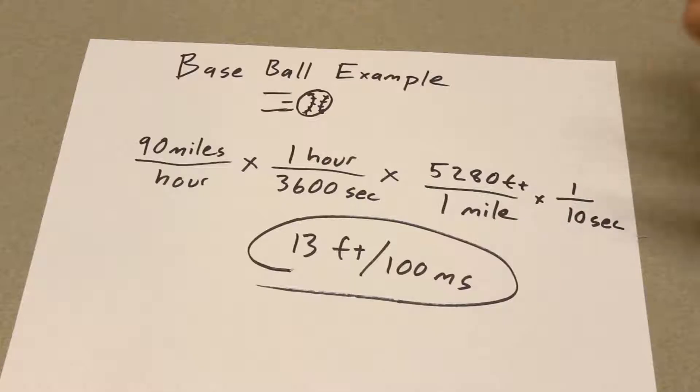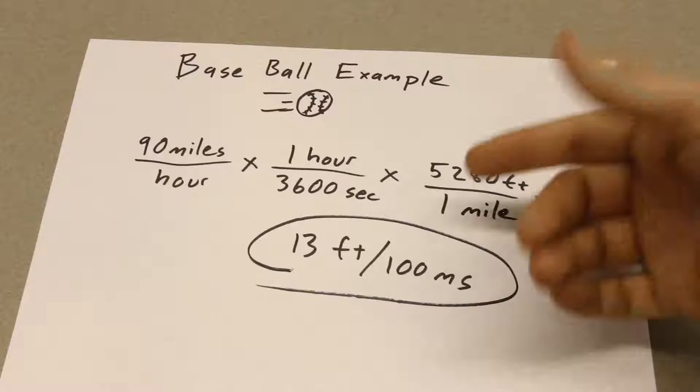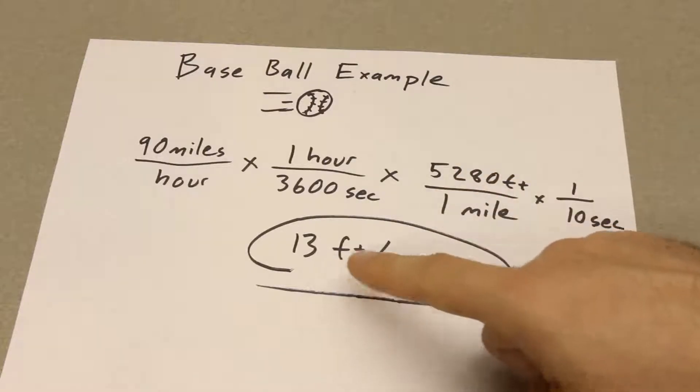So what we've got here is the baseball example. And let's say you've got a professional pitcher throwing the ball at 90 miles per hour.